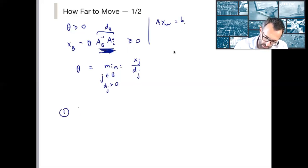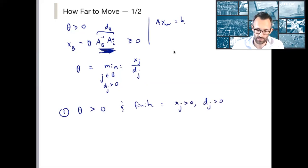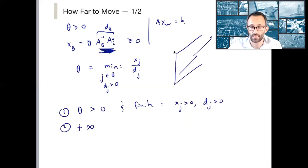Three things can happen. One, we could find that theta is greater than zero and finite. And this will happen if X J is positive and D J is positive. It could be plus infinity. How could that happen? Well, that's if we don't have a bounded polytope. So we have inequalities like this in two dimensions where it goes infinitely in that direction. So from there, you could start moving off. So this would happen if all D Js are less than or equal to zero.